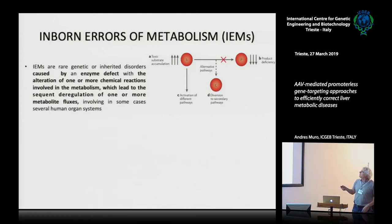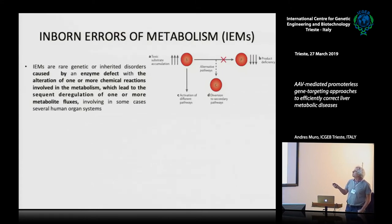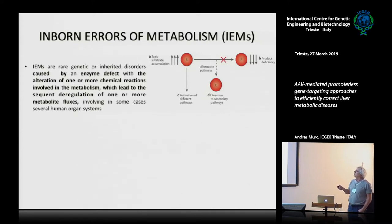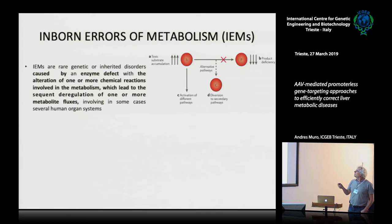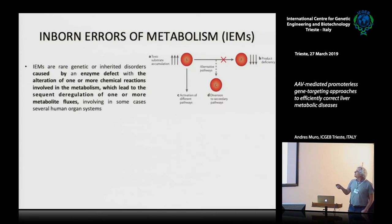We are dealing with inborn errors of metabolism. This is a metabolic pathway that goes from a substrate to a product. If this pathway is interrupted because of a mutation in one enzyme, we can have an increase of substrate because it is not processed anymore, which could be toxic. Or we could have a deficiency in the product, which is also dangerous. Eventually, secondary pathways may take over the intermediate metabolite.